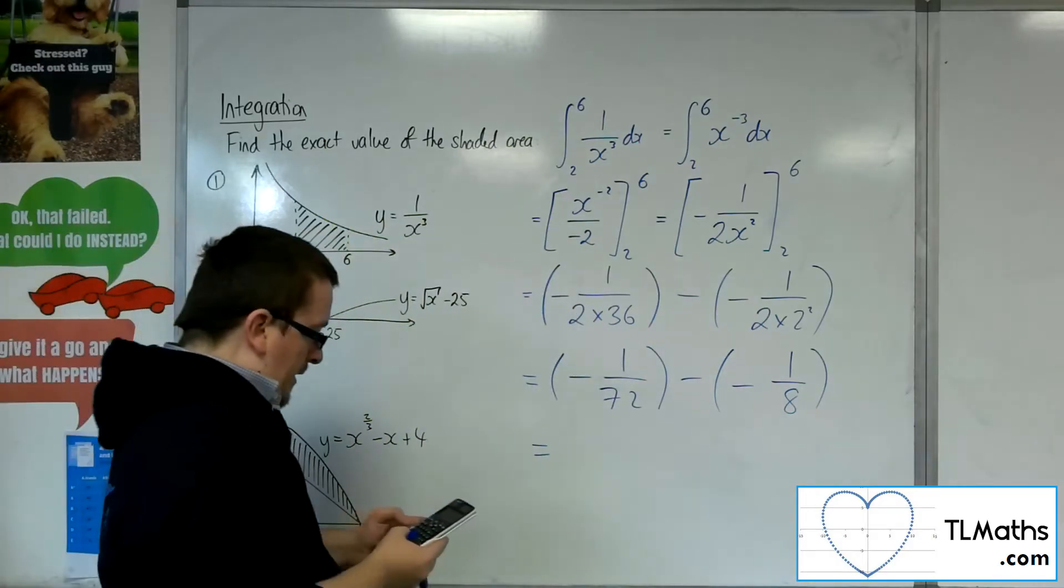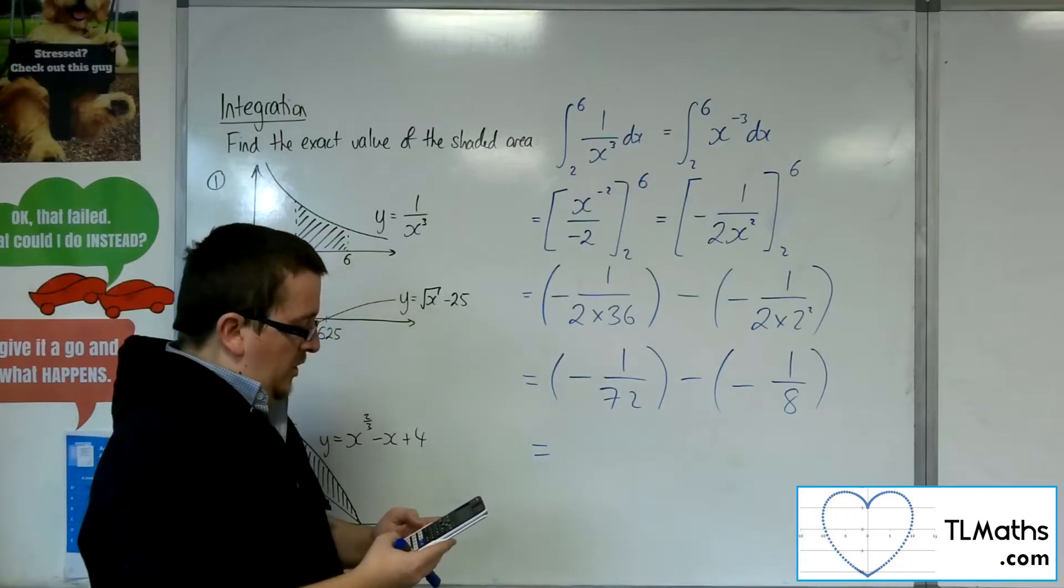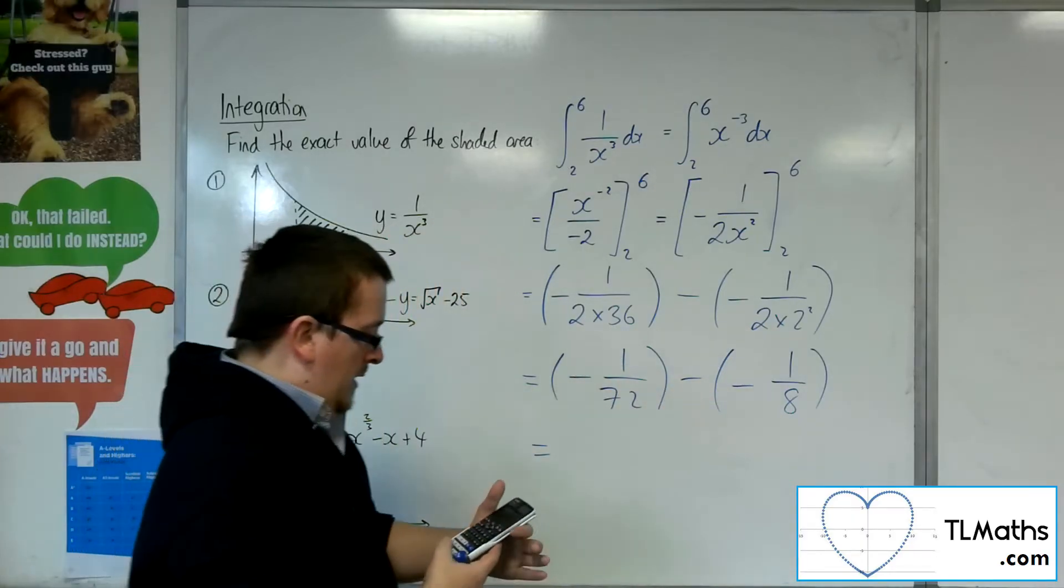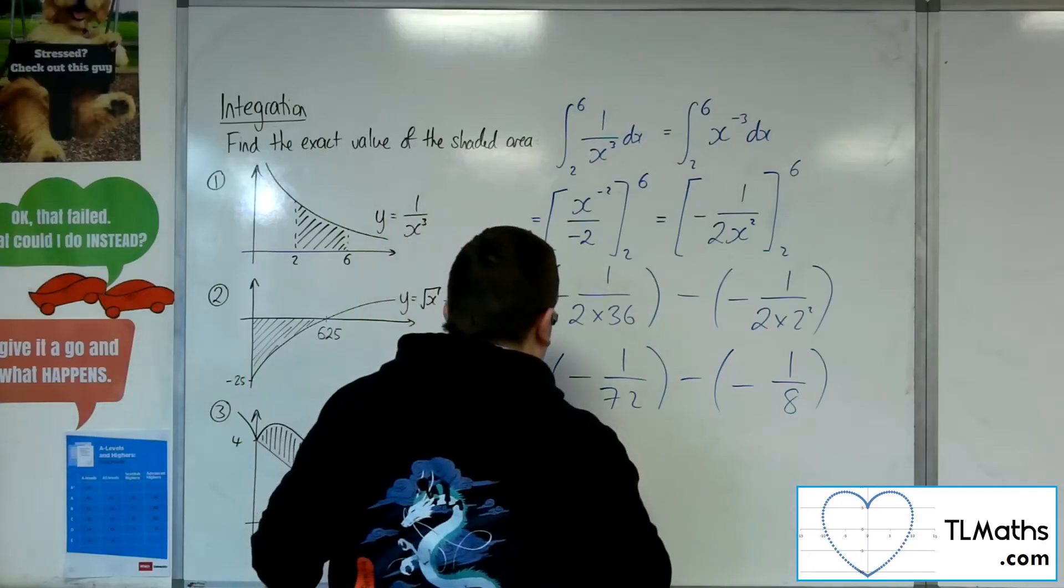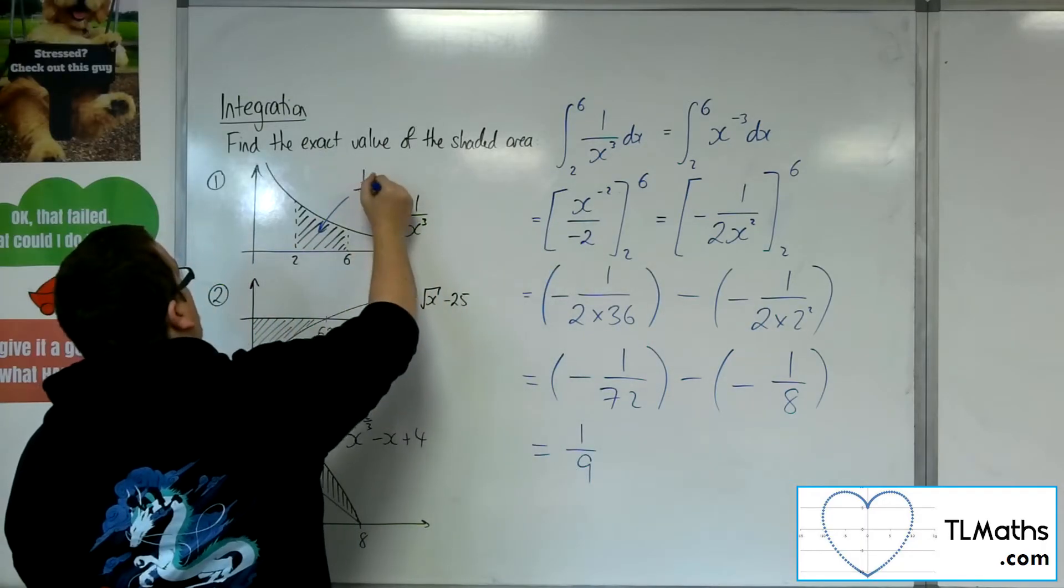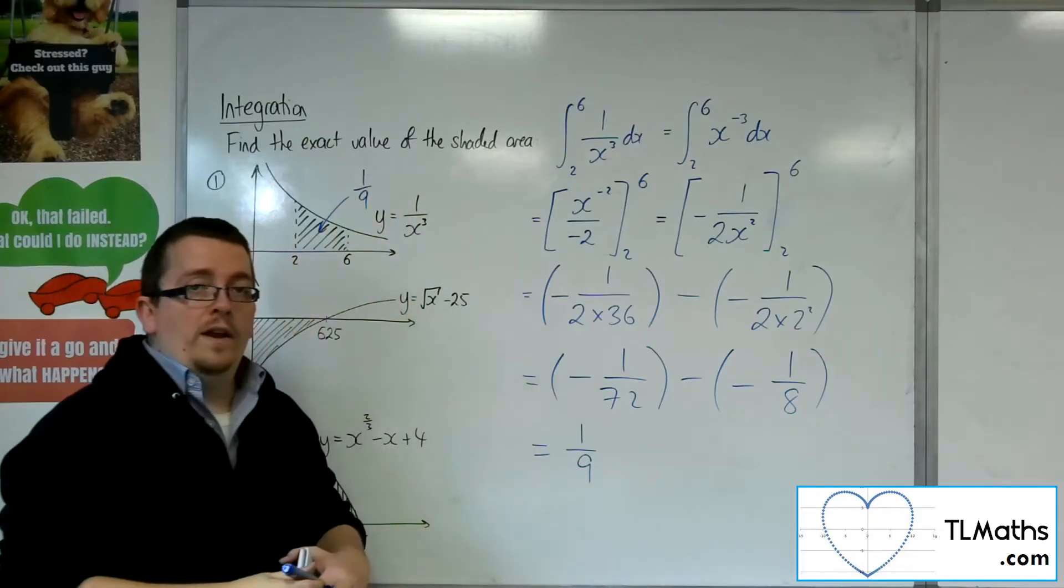So we've got minus 1 over 72, and then we're going to add 1 eighth, and we get 1 ninth. So this shaded region has an area of 1 ninth.